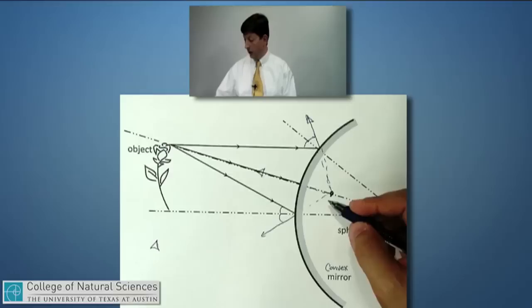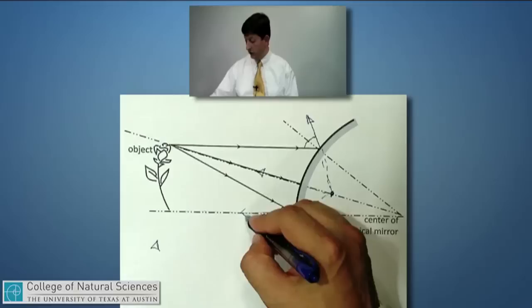By the same token, I can draw light rays from the bottom of the flower. Imagine that they travel straight back. And I would imagine that the flower would look like it's right there.